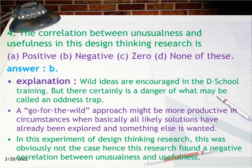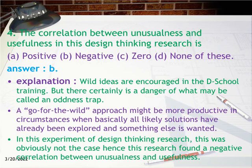Question 4: The correlation between unusualness and usefulness in design thinking research is: a) positive, b) negative, c) zero, d) none of these. Answer: b. Explanation: Wild ideas are encouraged in d-school training, but there is a danger of what may be called an 'oddness trap.' A 'go for the wild' approach might be more productive when all likely solutions have already been explored. In this design thinking research, that was not the case, hence a negative correlation between unusualness and usefulness was found.